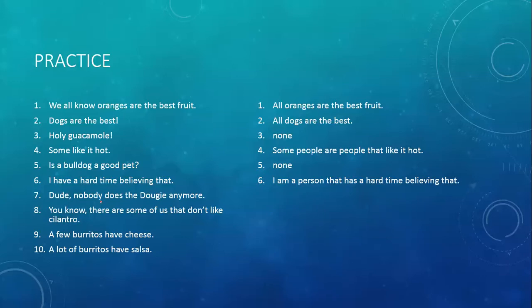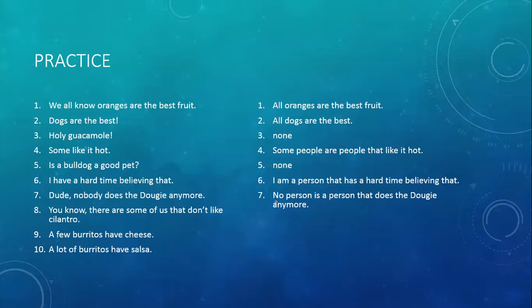Dude, nobody does the ducky anymore. Notice the word 'dude' is extraneous — that's what you say to get someone's attention. The proposition is: nobody does the ducky anymore. There's no word 'to be,' so we have to fill that in. And it becomes: no person is a person that does the ducky anymore. Notice this is a type E proposition — no A is B.